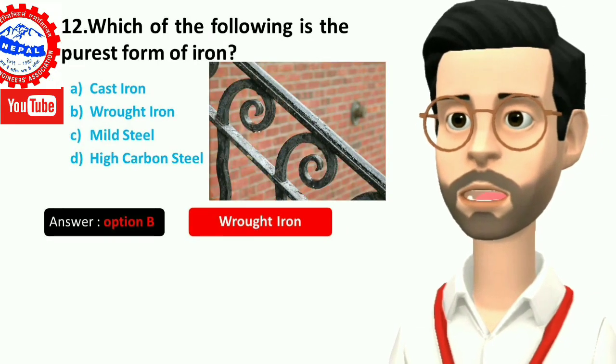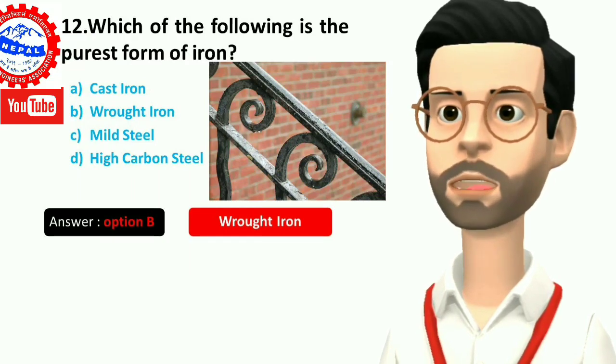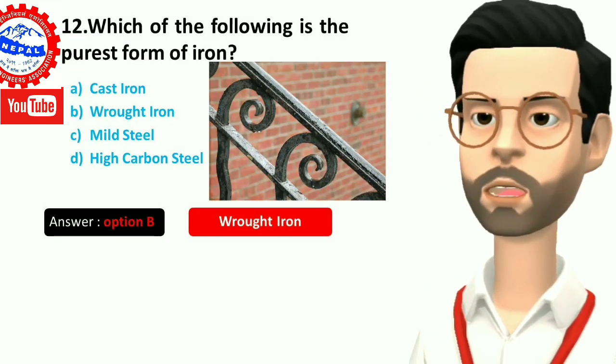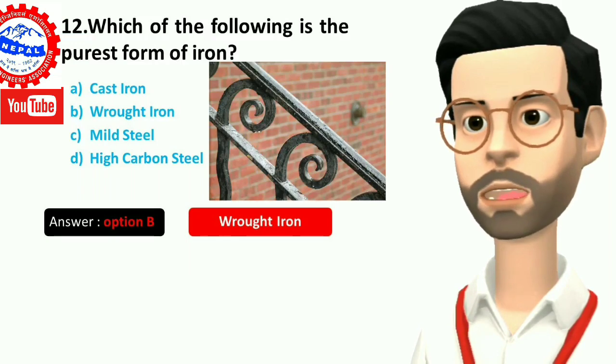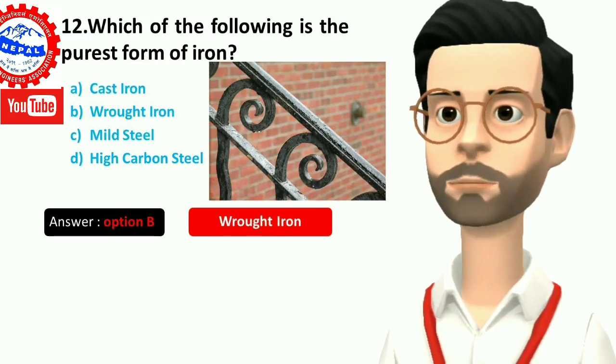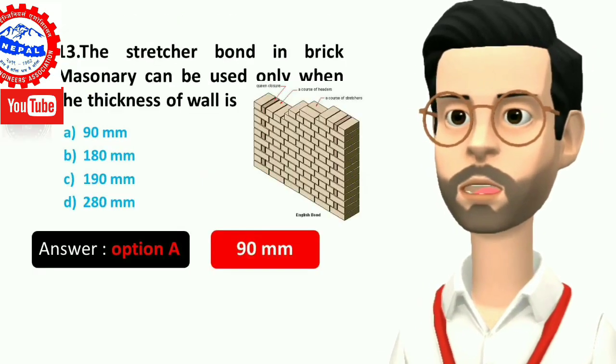Twelve, which of the following is the purest form of iron? A) cast iron, B) wrought iron, C) mild steel, D) high carbon steel. Answer is option B, wrought iron.